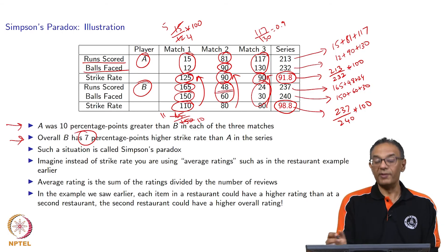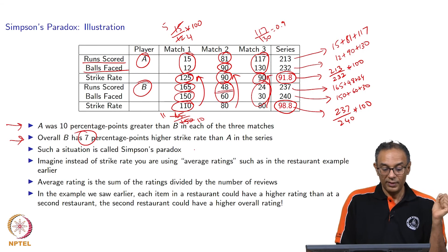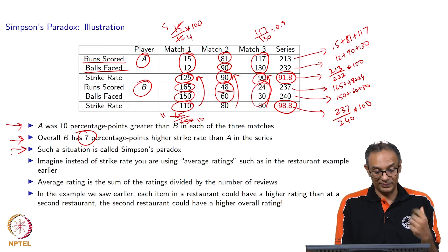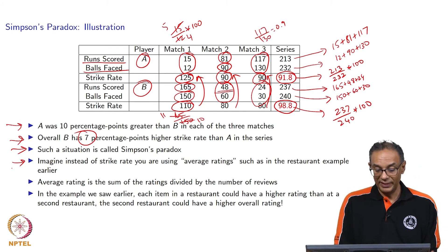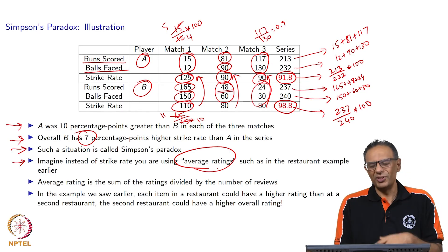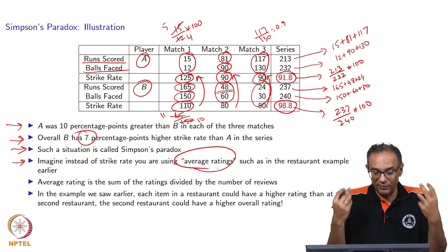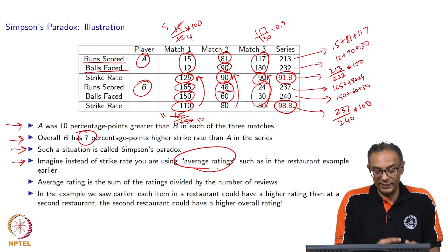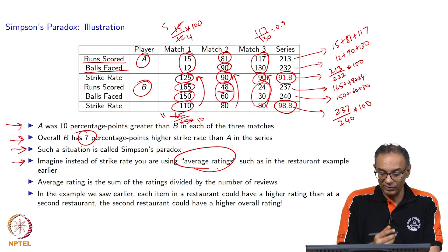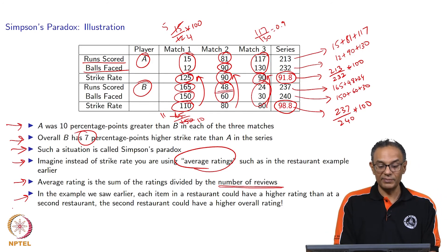However, overall across the three games, B has a strike rate about 7 percentage points higher — 98.8 versus 91.8. So B has a better strike rate throughout the series. This is bizarre because if you look at each match, A seems to be better than B in terms of strike rate, but overall B seems to be better. This kind of situation is what is called Simpson's paradox. In the restaurant example from the previous lectures, we were using average ratings but did not pay attention to how many reviews were there. Many good review sites will also tell you how many reviews there were — you have to take that into account.